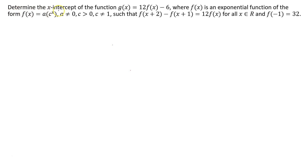Determine the x-intercept of the function g of x equals 12 times f of x minus 6, where f of x is an exponential function of the form f of x equals a times c to the power of x. Here, a cannot equal 0, c has to be greater than 0, c cannot equal 1, such that f of x plus 2 minus f of x plus 1 equals 12 times f of x for all real numbers, and f at negative 1 is equal to 32.